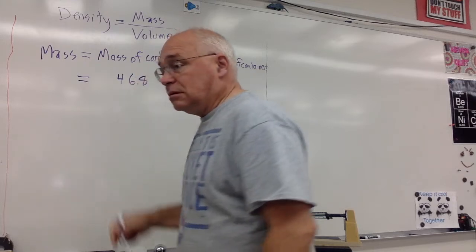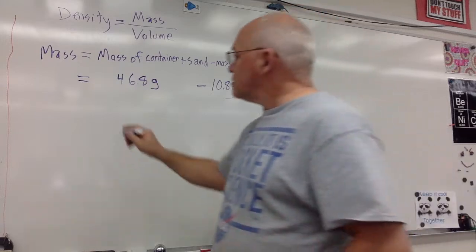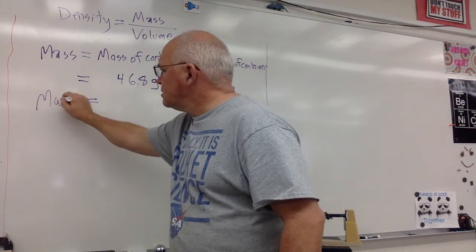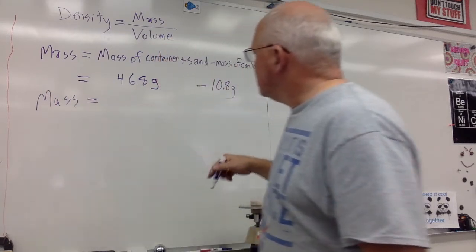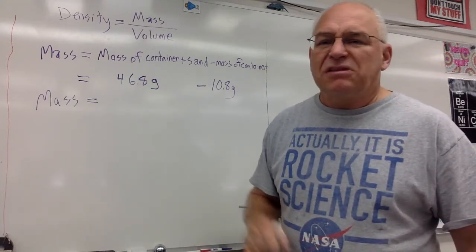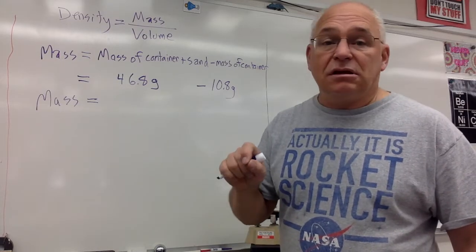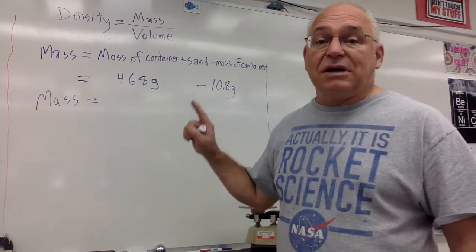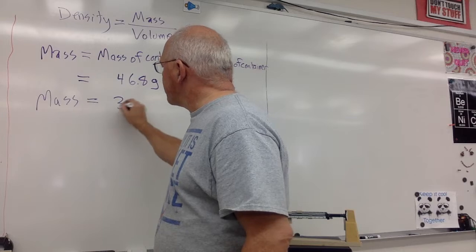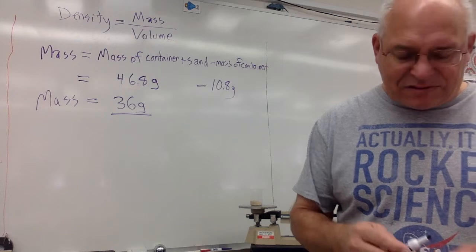And again, the units, grams, subtracting grams. So my answer is going to be grams. So finally, the mass of the sand, 46.8 minus 10.8. I think I can do that in my head. 46.8 minus 10 would be 36.8. And then minus another 0.8 gives me 36. So I get 36 grams. There is the mass of the sand.